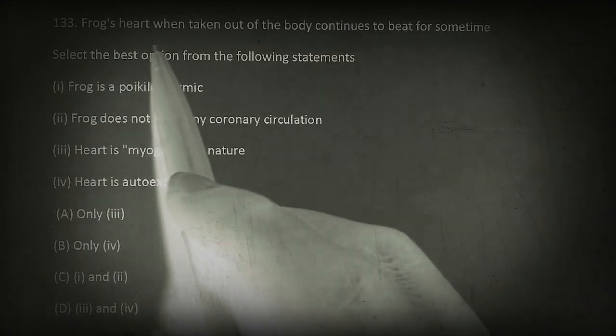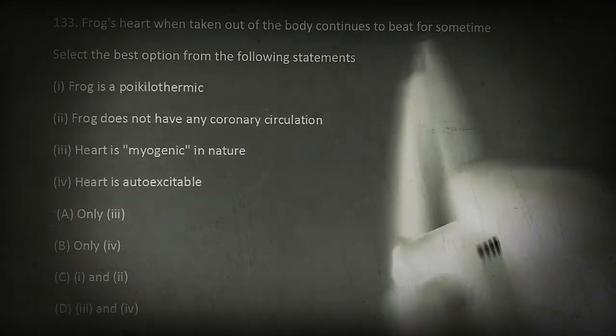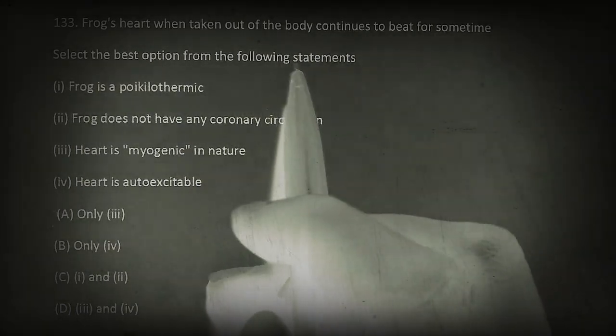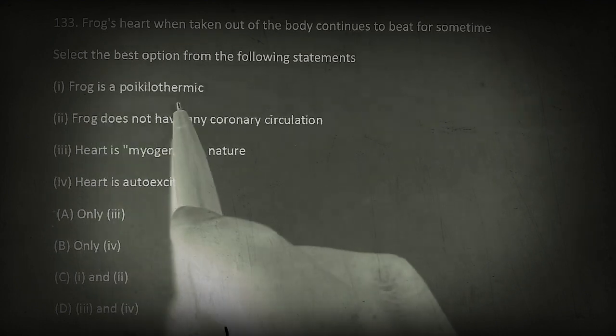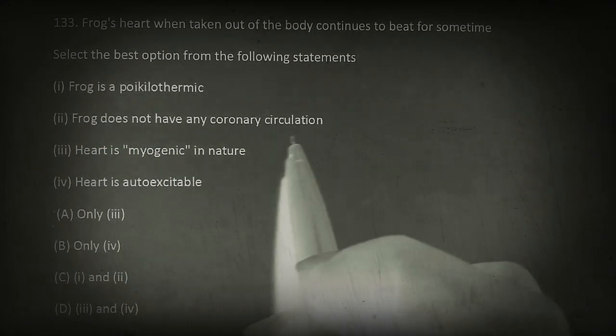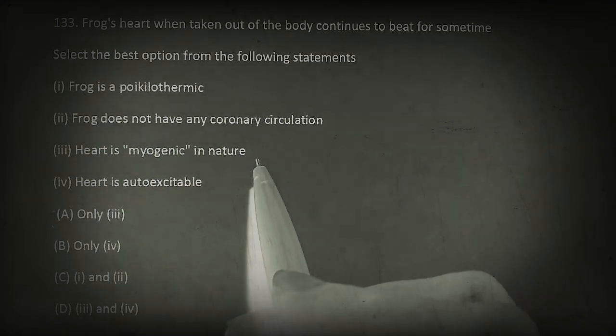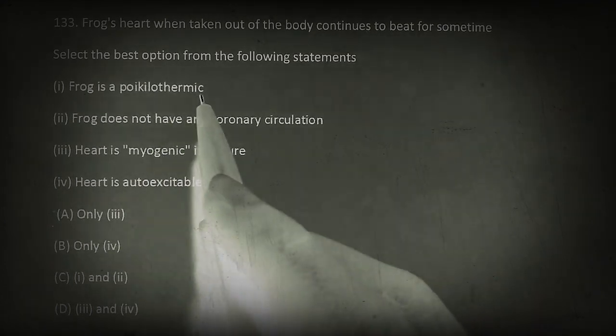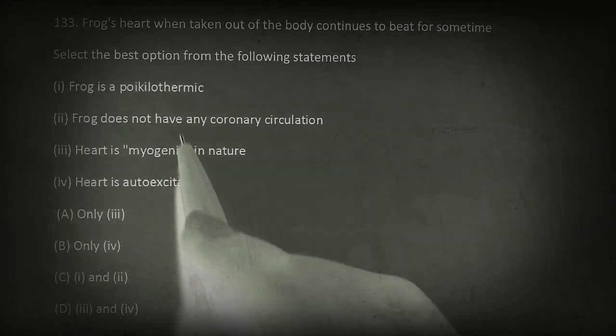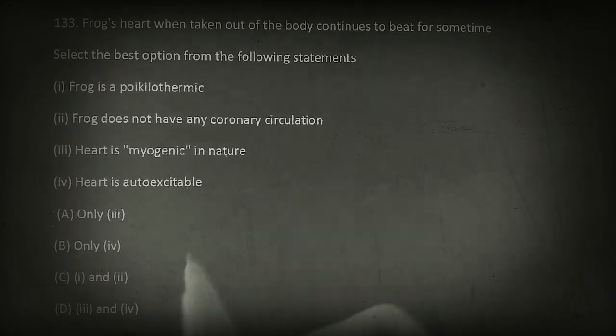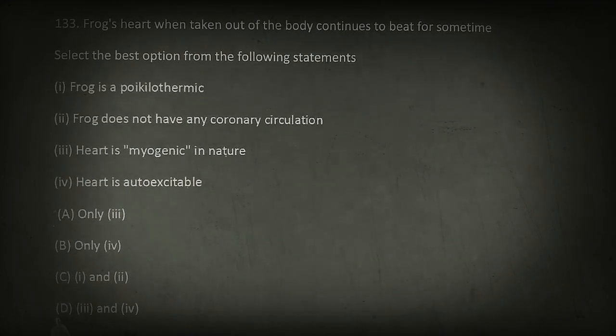Frog's heart, when taken out of the body, continues to beat for some time. Select the best option from the following statements: Frog is poikilothermic. Frog does not have any coronary circulation. Heart is myogenic in nature. And the heart is auto-excitable. From the above given options, statement third and fourth are correct. That is, option D is the correct choice.